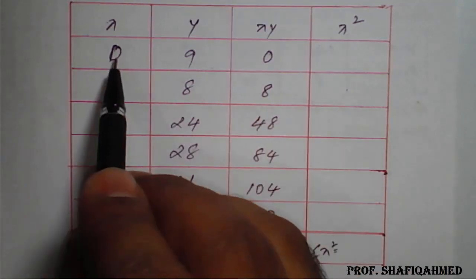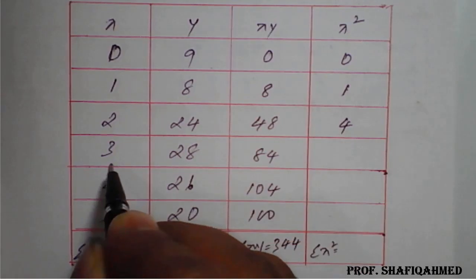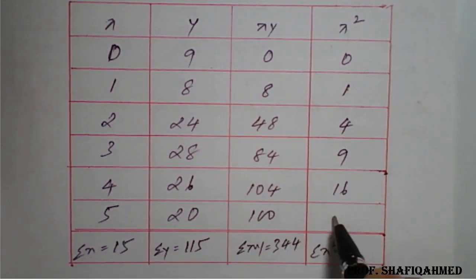Similarly, 0 squared is 0, 1 squared is 1, 2 squared is 4, 3 squared is 9, 4 squared is 16, 5 squared is 25. If you add these all, summation of x squared will be 55.